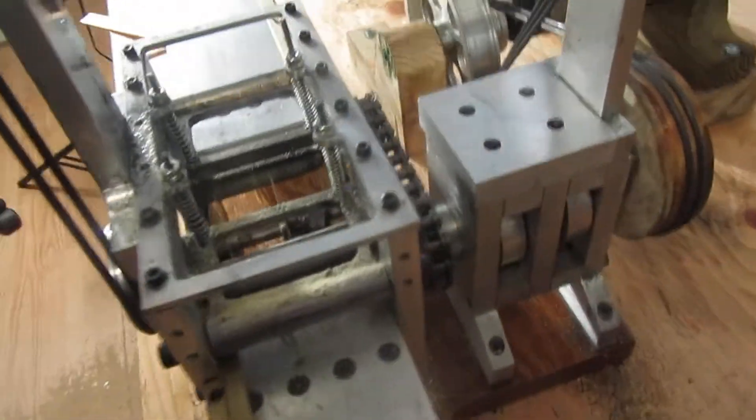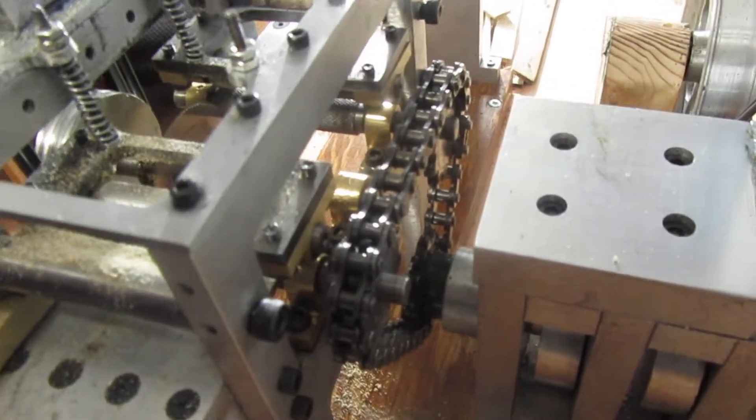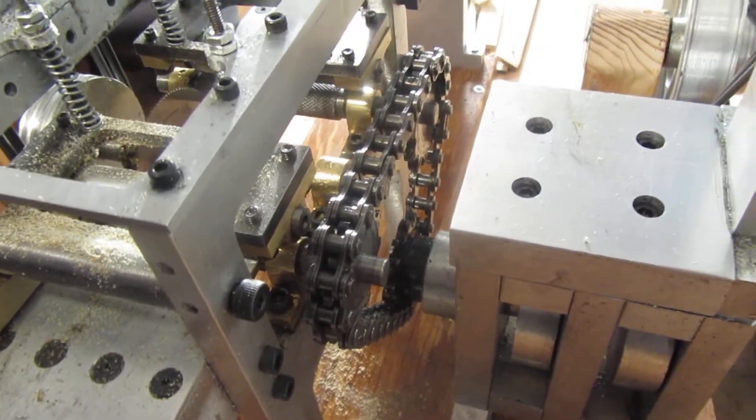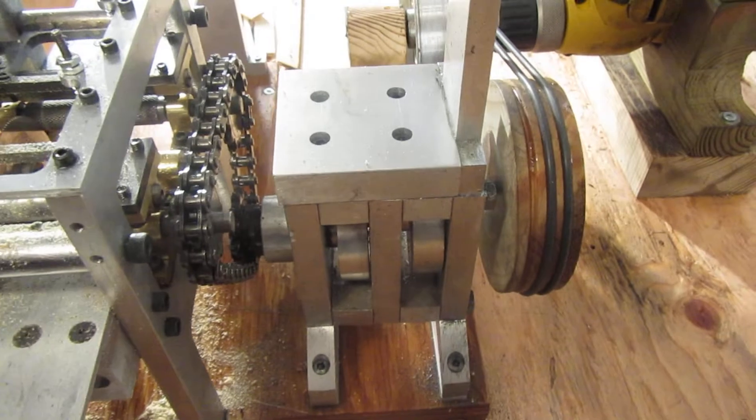The rollers which feed the wood through are driven by a chain drive from this small reducer, a gear reducer.